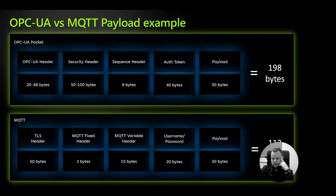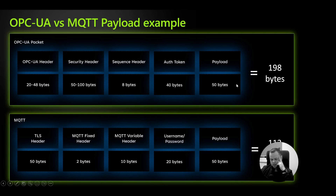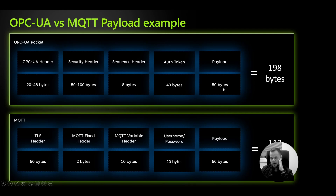If we split the packet size for MQTT and OPC UA, for OPC UA you have the OPC UA header, security header, sequence header, and payload. For MQTT you have the TLS encryption header, MQTT fixed header, MQTT variable header, username and password, and payload. As you can see on screen, the difference between them is quite a few bytes, but it's not a dramatic difference.